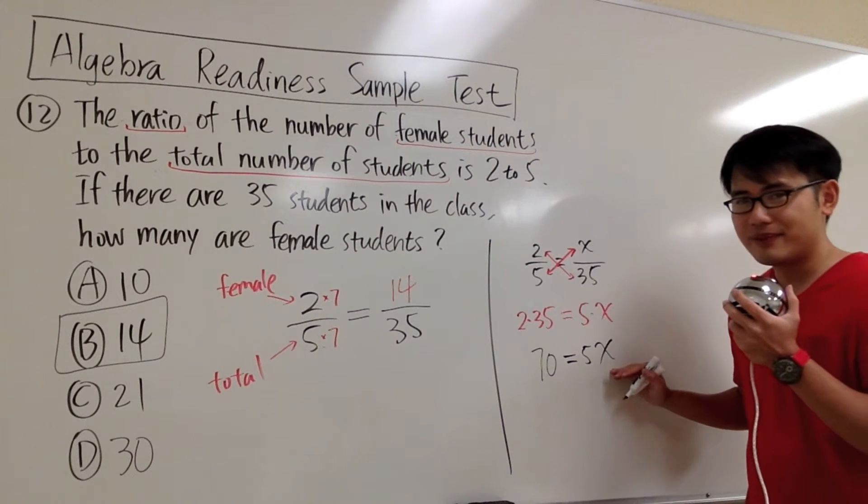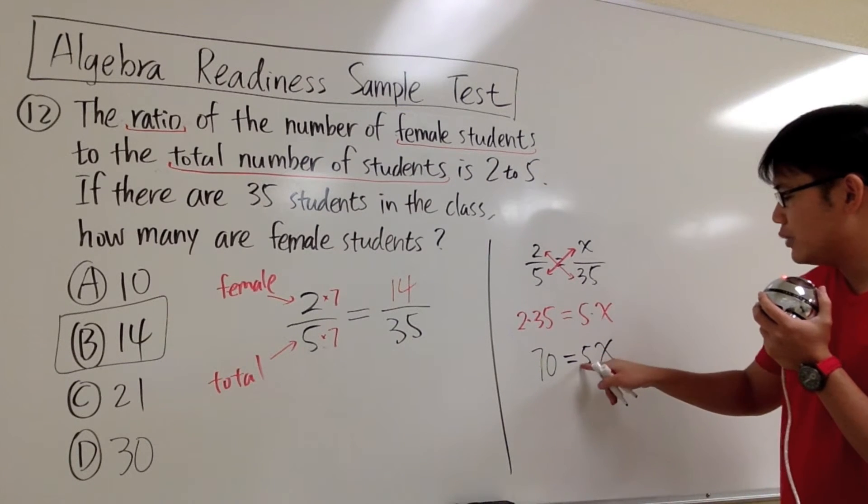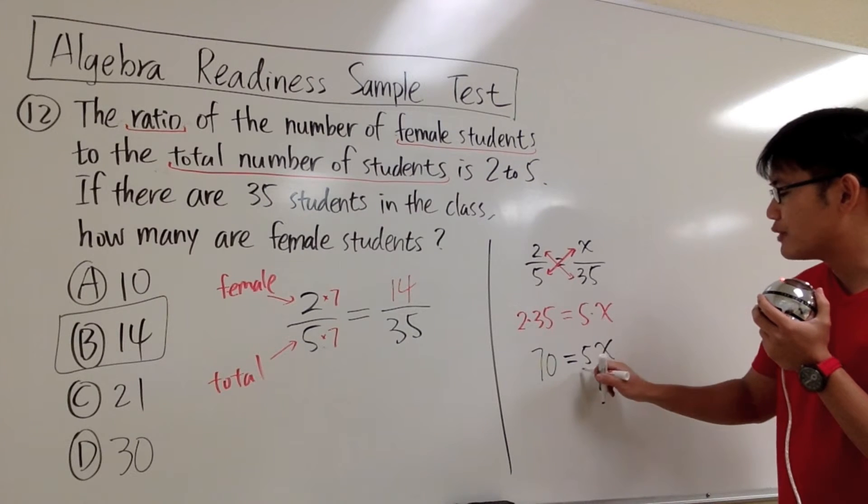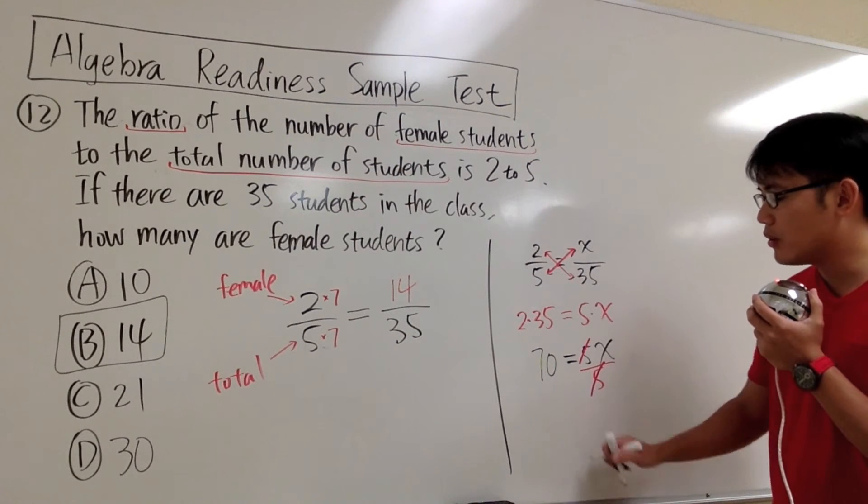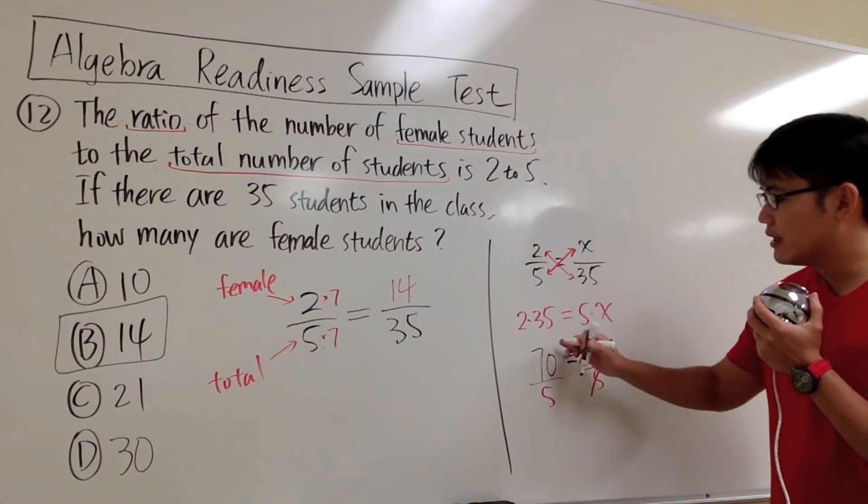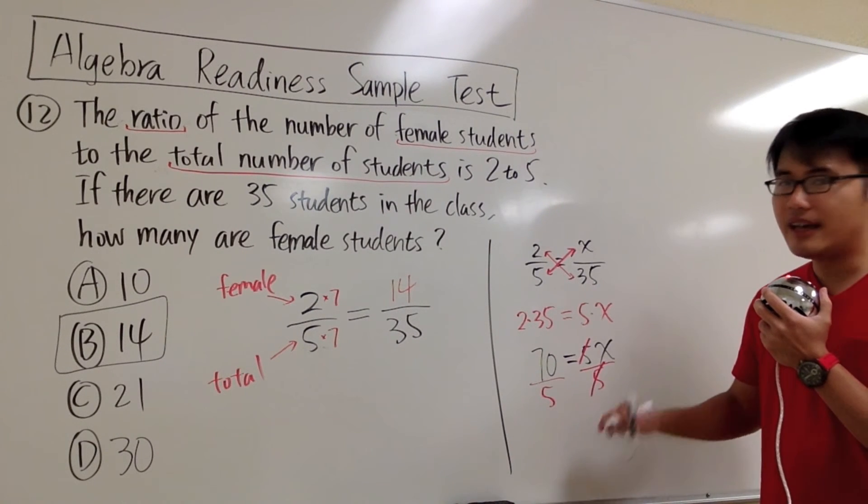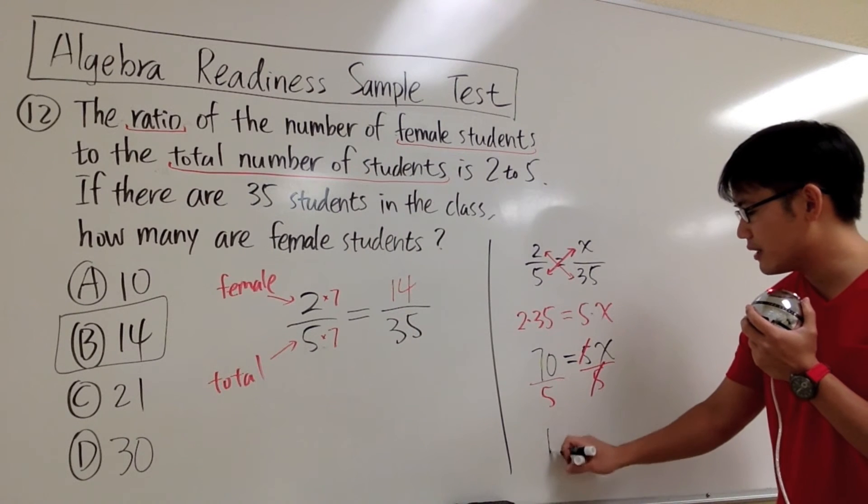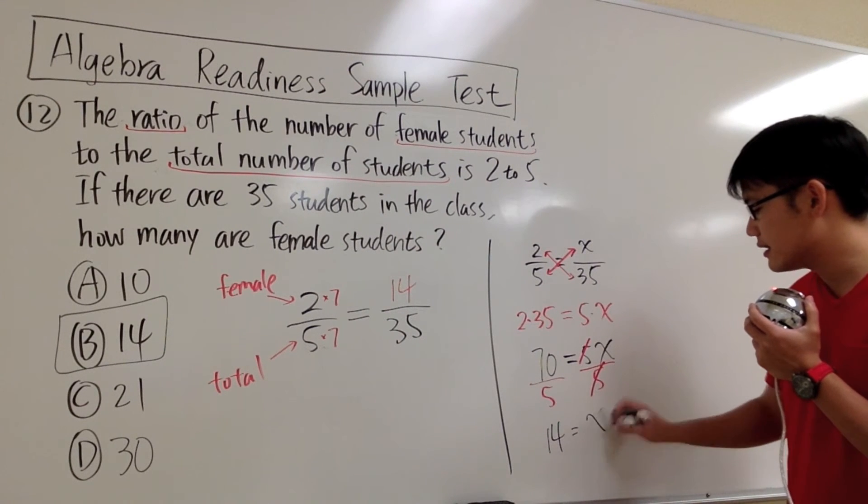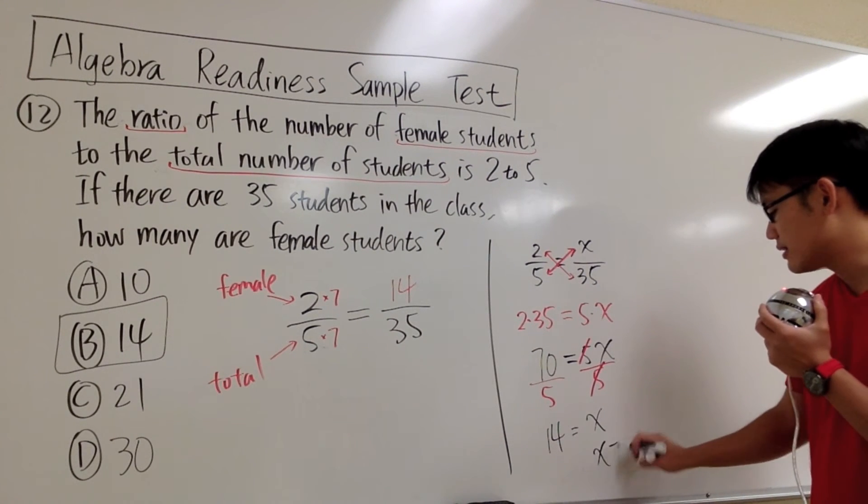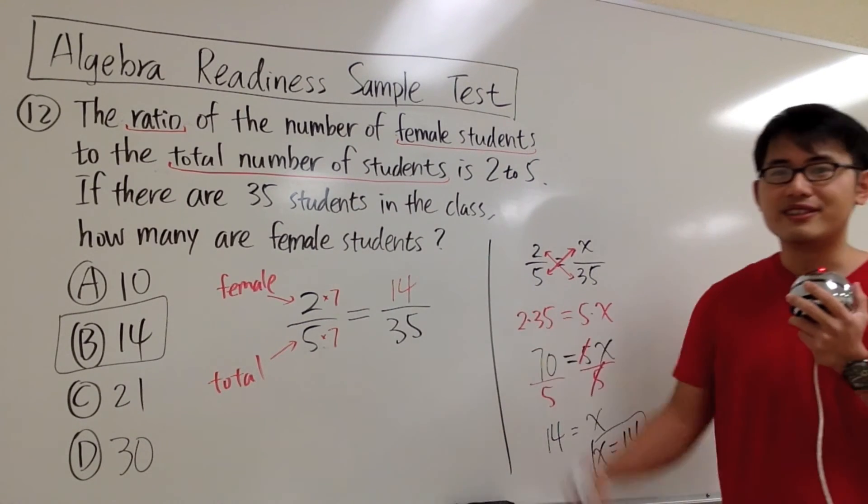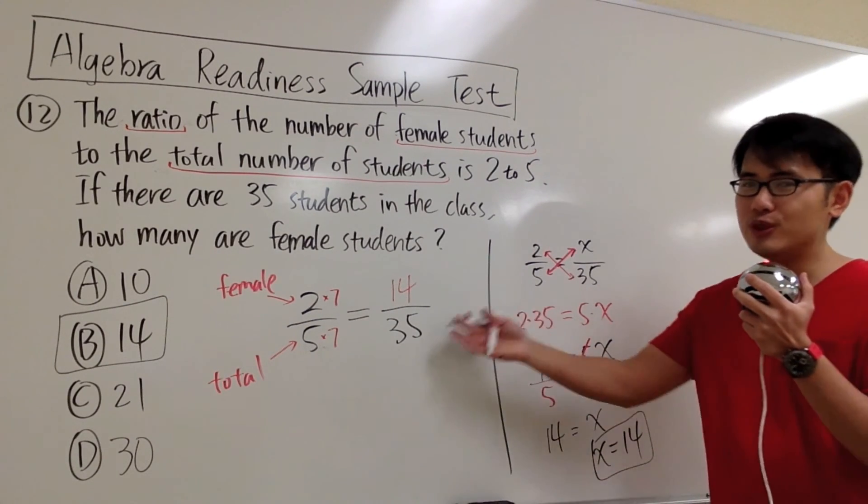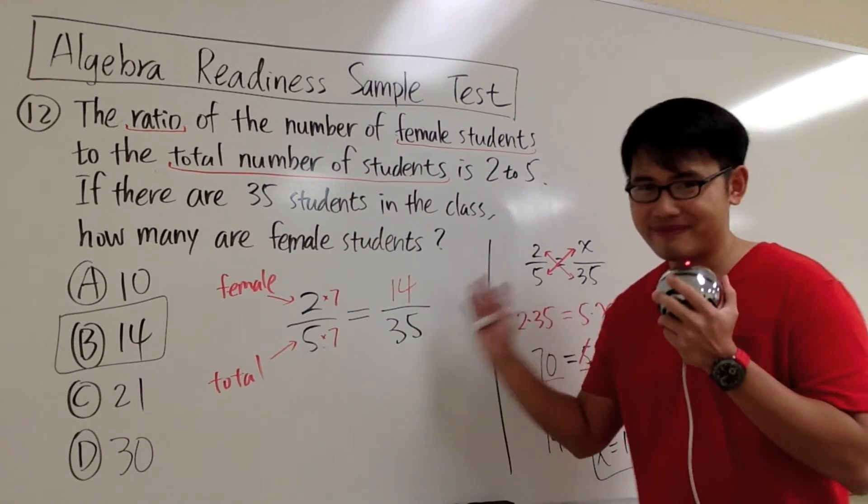We want to get x by itself. To do that, here we have 5 times x, we have to divide both sides by 5 so this 5 and that 5 can cancel. Then I have to work out 70 divided by 5, and the answer to that will be 14. And that's x. In other words, we know x equals 14. As you can see, same answer. Once again, let me know which method you guys like better. That's it.